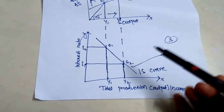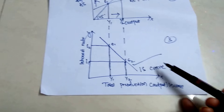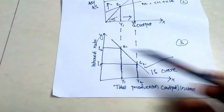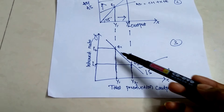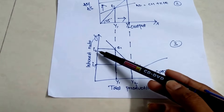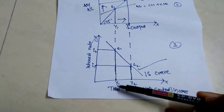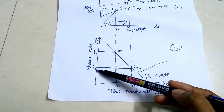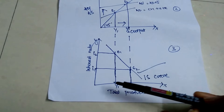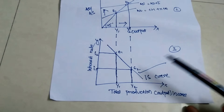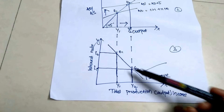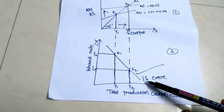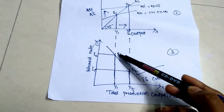Finally, the IS curve shows the interest rate and output. When interest rate is high, output is less; when interest rate is low, we make more investment and more production. When we join these two equilibrium points, we get the IS curve.